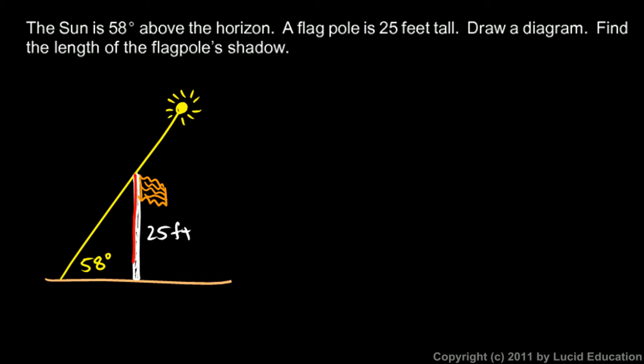You can see the right triangle: the flagpole is vertical, the ground is horizontal, so that's a right angle. That ray of sunlight is the hypotenuse. The 25-feet-tall flagpole is the side opposite the 58 degree angle, and then this bottom piece down here, which is the shadow that we're looking for, is adjacent to the 58 degree angle. So let's call this length x.